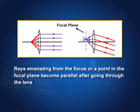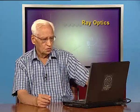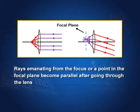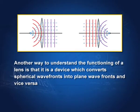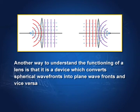Rays emanating from the focus become parallel to the axis after refraction through the lens. Similarly, rays emanating from a point in the focal plane become parallel to each other, but not necessarily parallel to the axis. This is another way of understanding the functioning of a lens: spherical wave fronts become plane wave fronts after light passes through the lens, and plane wave fronts become spherical wave fronts when light passes through the lens. We shall study wave fronts in more detail later.